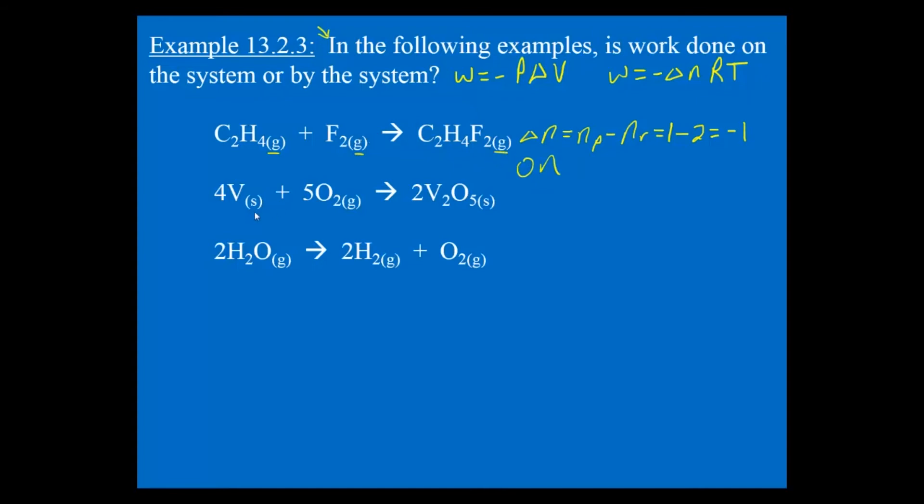Let's take a look at this reaction. Here's a few new things to consider. Our products are solid, one of our reactants is solid. How do we approach this if we need to find delta n?